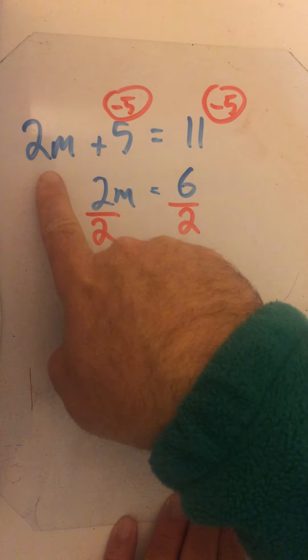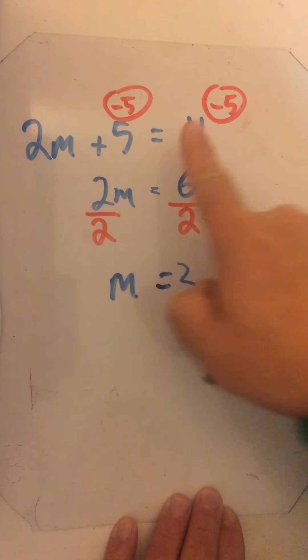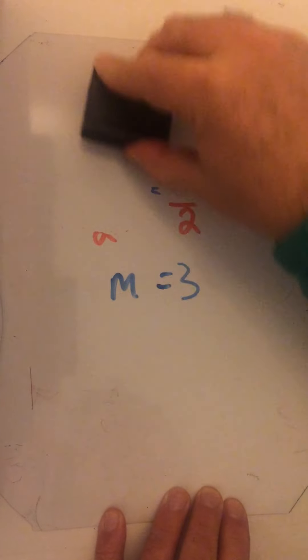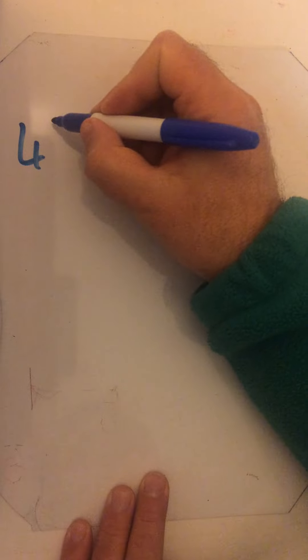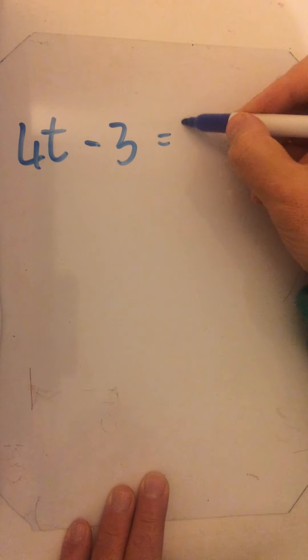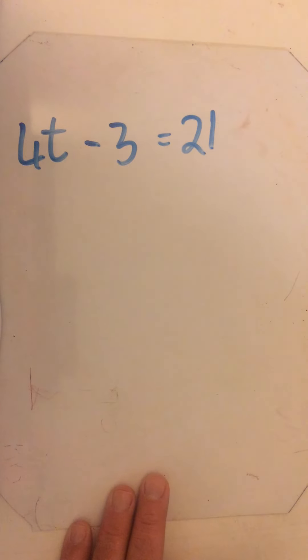Let's just check: 2 times 3 is 6, plus 5 is 11. Yes, correct. These become harder to work out in your head — this is why we need the method. As they get trickier you won't be able to do it mentally, so we must use this method. Next: 4t minus 3 equals 21.